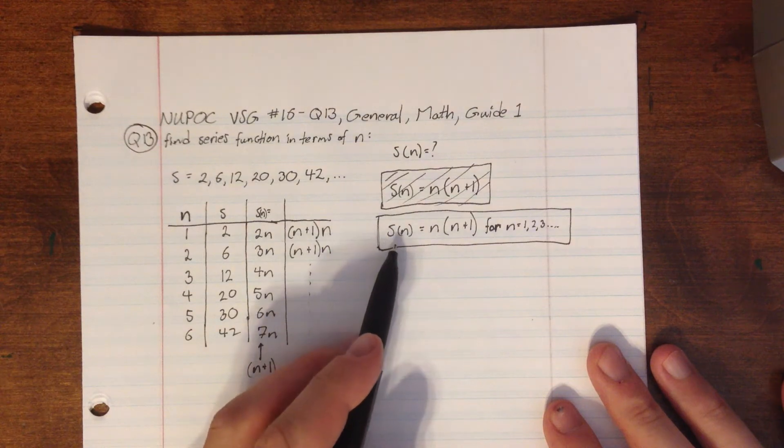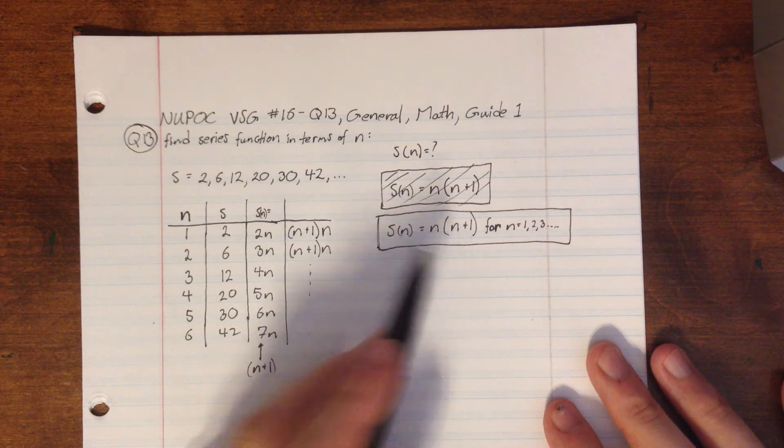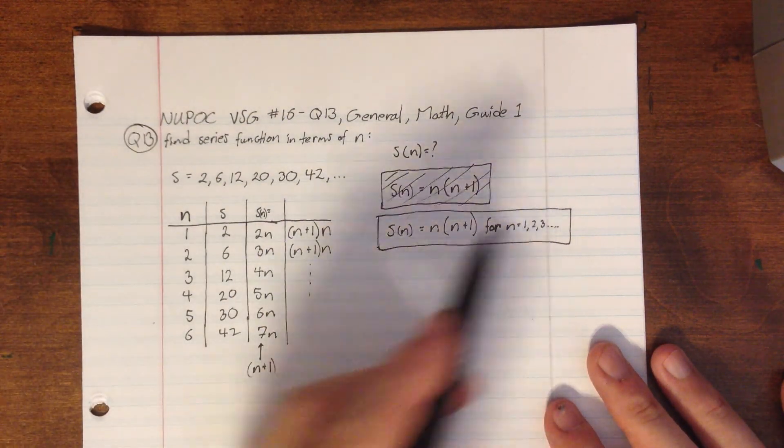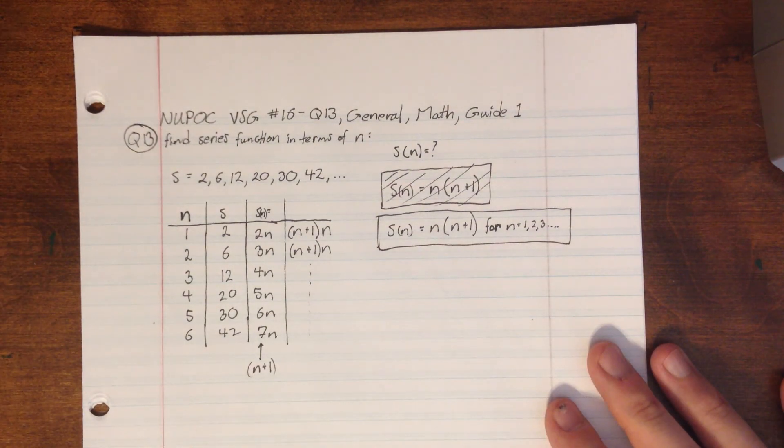So this is our solution here: s completely in terms of n, n times n plus 1, for n equals 1, 2, 3, etc. So this is our solution there.